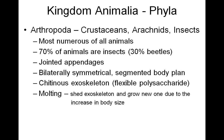We see bilateral symmetry in this group, and they have a segmented body plan with a head, a thorax, and an abdomen. They have a chitinous exoskeleton with a flexible polysaccharide. Molting does take place — or ecdysis — which is the shedding of the old exoskeleton, and then they grow a new one. This is due to the increase in body size as the exoskeleton becomes too small.